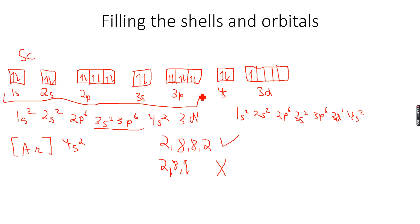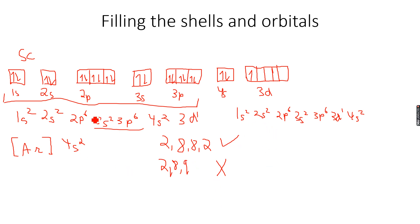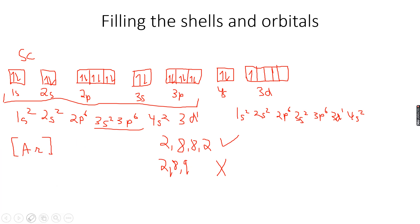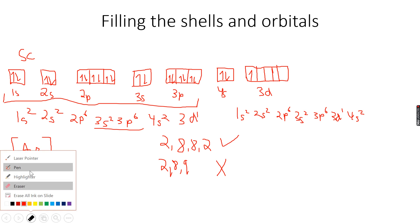We always write it in order — that's why it is 1s2 2s2 2p6 3s2 3p6 3d1 4s2. Remember, even though we write 3d before 4s, we will always fill 3d after 4s. Now let's write this in the argon (Ar) shorthand configuration as well — we write 3d before the 4s.